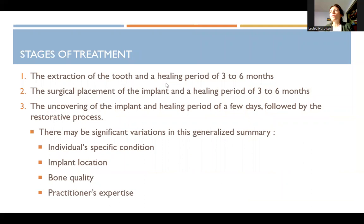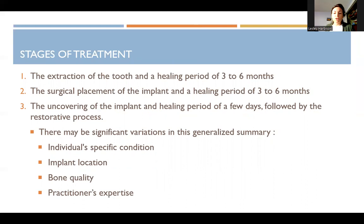The stages of treatment include extraction of the tooth and a healing period of about three to six months — generally faster on the maxilla than the mandible. Then there's the surgical placement of the implant and another healing period of three to six months. If they extract the tooth and do a bone graft, they want that bone to solidify before placing the implant, so there are usually two separate surgeries. Sometimes they will place an implant immediately after extraction — it depends on the surgeon, their expertise, and the specific situation. In general, there will be an extraction with or without bone grafting, then surgical placement, and both need separate healing times.